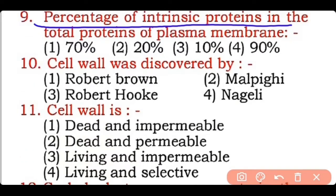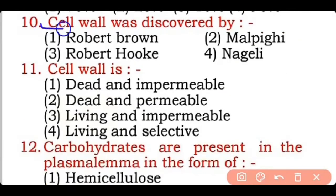Question 9: The percentage of intrinsic protein in the total protein of the plasma membrane is — 70%, 20%, 10%, or 90%? Correct answer is option one — almost 70% of intrinsic proteins are present in the plasma membrane.